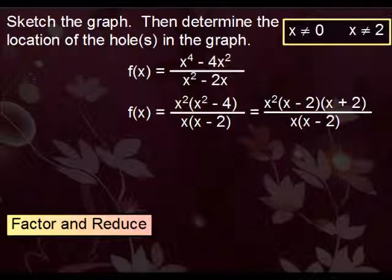Now that we have this completely factored out, we can go ahead and reduce this now. x minus 2's reduce out. And hopefully you recognize that these two reduce out as well. You have x to the second and x to the first. That leaves us with just x to the 1 up top.